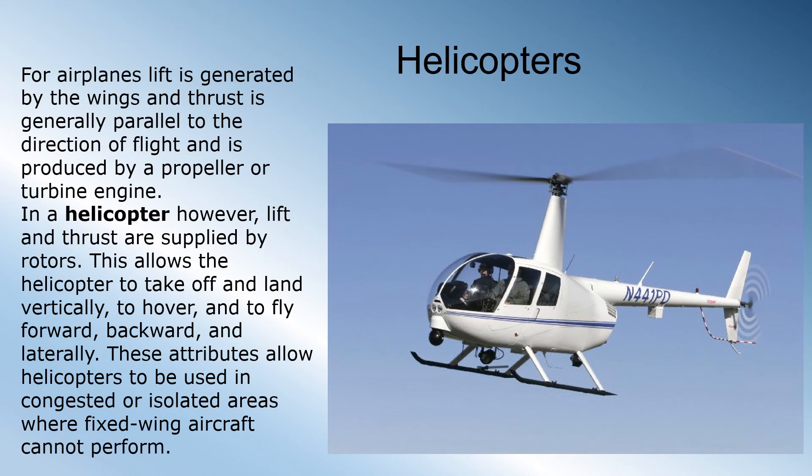In fixed wing aircraft, lift is generated by the wings and thrust is produced by the power plants, and is generally parallel to the direction of flight. In a helicopter or rotorcraft, however, lift and thrust are both produced by the rotor blades. This allows the helicopter to move forward, sideways, backwards, up, and down — to get in and out of smaller places than a fixed wing aircraft can, and perform duties and tasks that a fixed wing aircraft cannot.